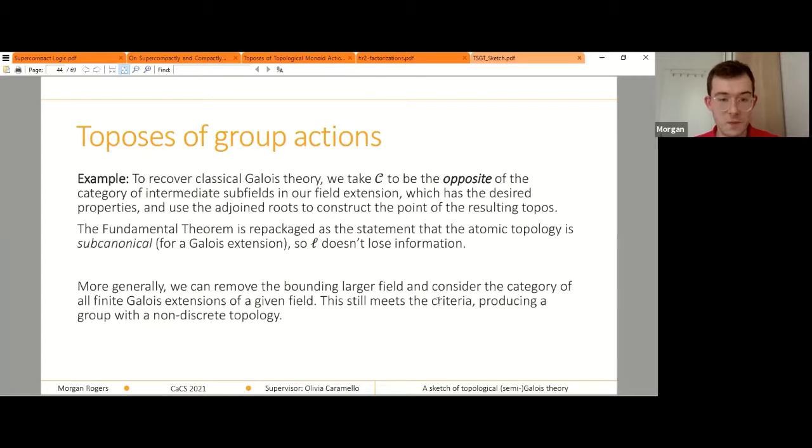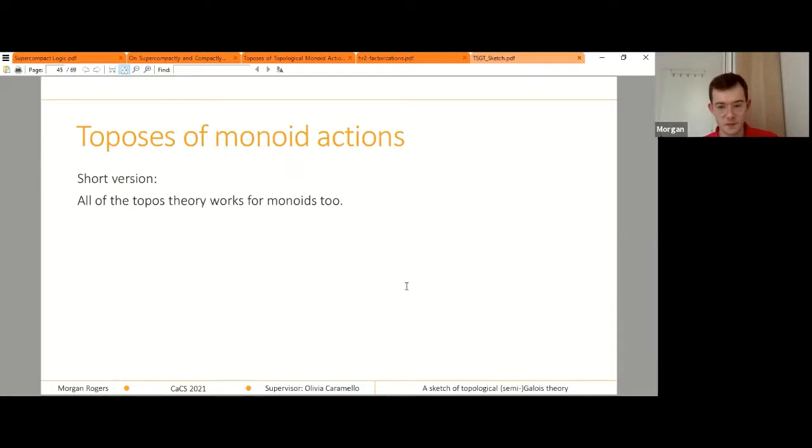And more generally, we can remove the bounding larger fields. So for example, I can consider all of the algebraic extensions. I can consider the algebraic completion of my field and rather than getting a discrete group, I get a topological group and everything still works. That's why I had to go to the effort of introducing topological groups. So I don't know how much time I have left. It's probably negative. So here's the short version. All of this, all of the topos theory side works for monoids too.